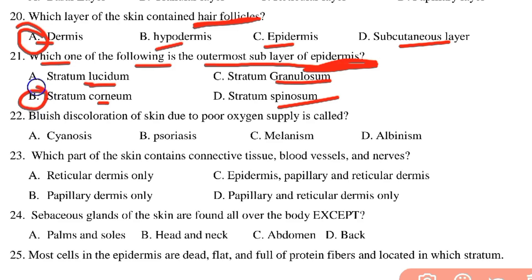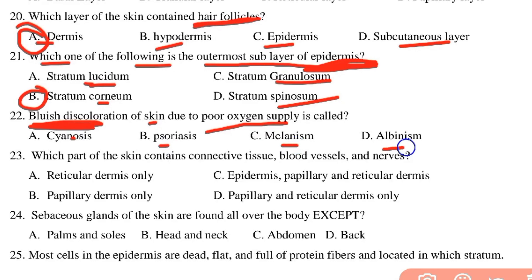Blue discoloration of the skin due to poor oxygen supply is called what? The options are cyanosis, psoriasis, melanism, and albinism. The answer is cyanosis — it results from poor blood circulation and insufficient oxygen supply to the skin.